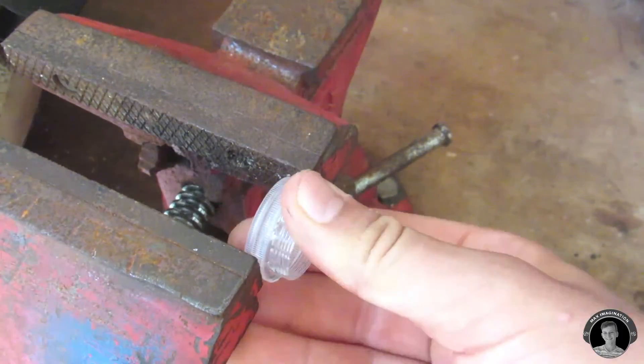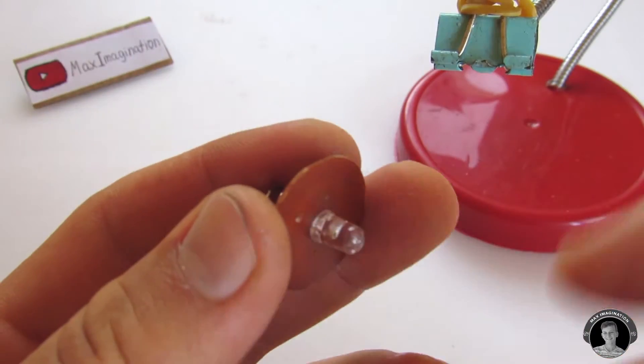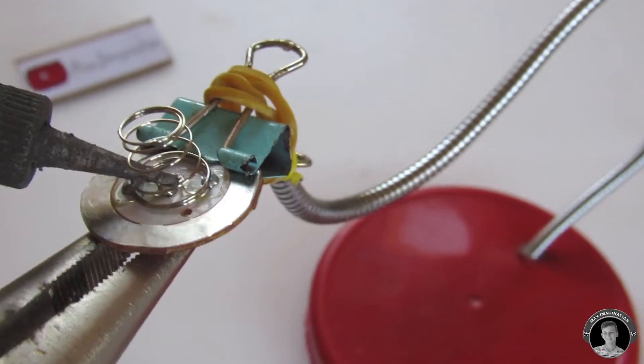I took the threaded part of that waterproof capsule and cut off the thread. Instead of the LED sitting on that platform with a spring, there will be wires coming out.